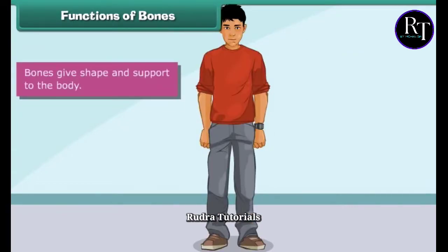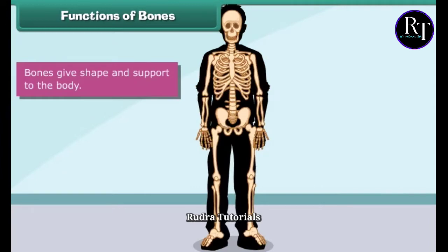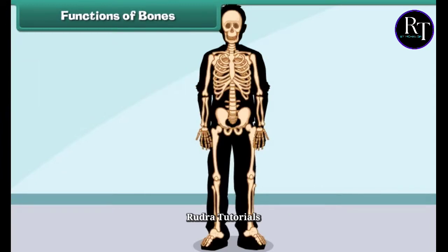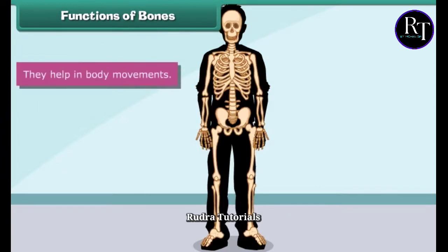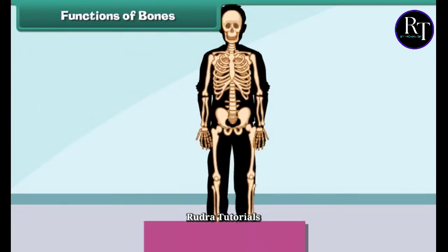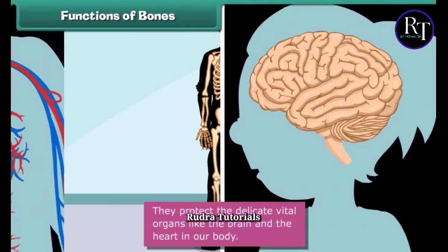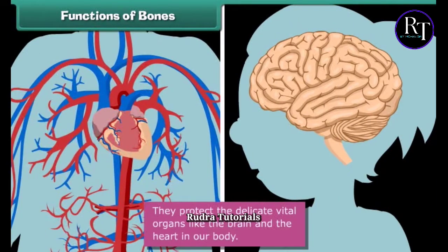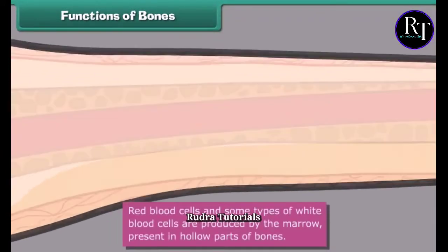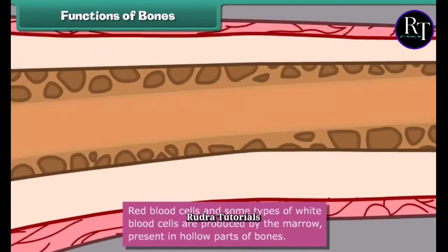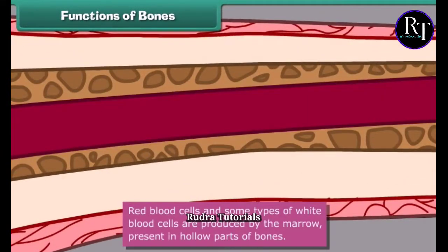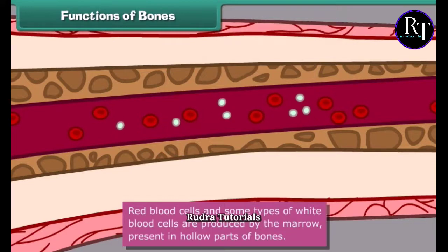Bones give shape and support to the body. They help in body movements. They protect the delicate vital organs like the brain and the heart in our body. Red blood cells and some types of white blood cells are produced by the marrow present in the hollow parts of the bones.